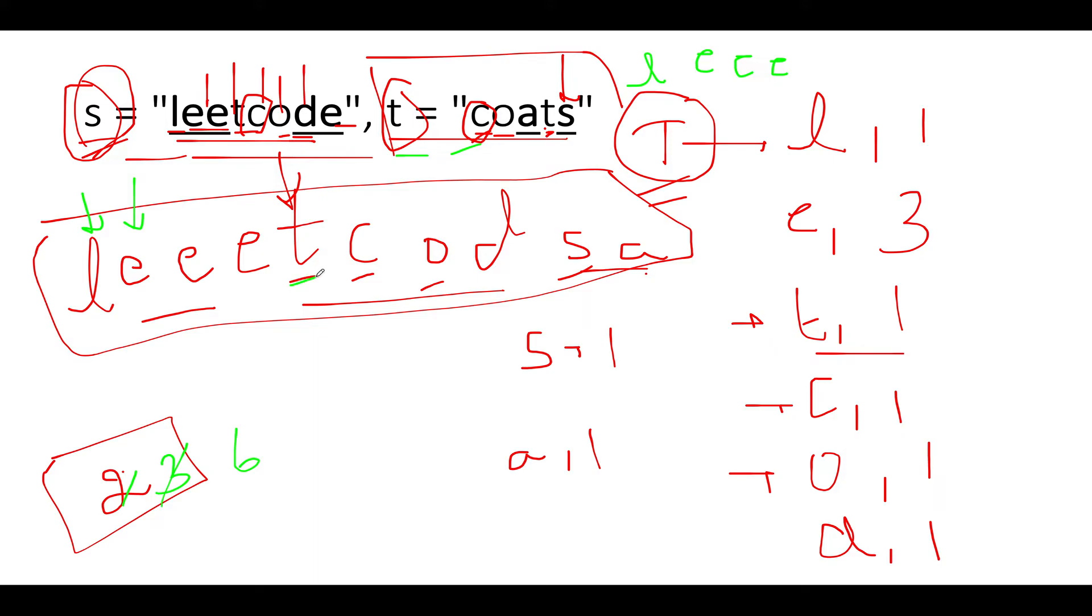Next we see is t - t is already part of the string so it should not be added. Next we see is c - c is already part of the string, it should not be added. O is already part of the string. Next we see is d - d should be added so let's add d. The count becomes seven. S and a are already part of this string so we should not add it again.